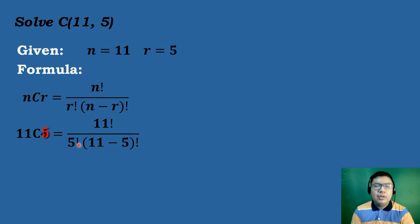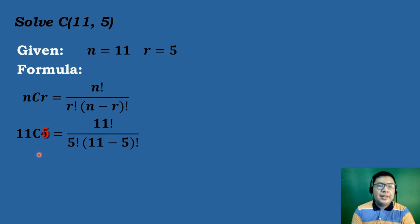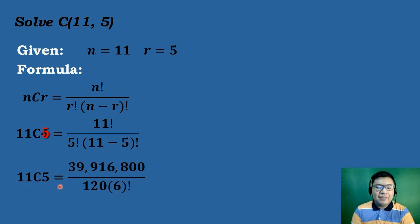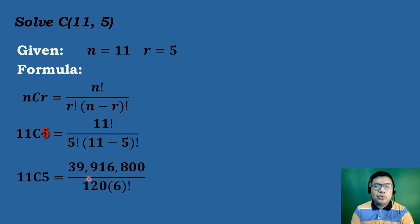So we have 11C5 equals 11 factorial over 5 factorial times the quantity 11 minus 5 factorial. For 11 factorial, press 11 followed by the factorial symbol, then press equal — the answer is 39,916,800. And 5 factorial is 5 times 4 times 3 times 2 times 1, which equals 120. Then 11 minus 5 equals 6, so we also need 6 factorial.